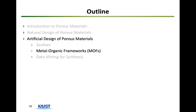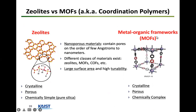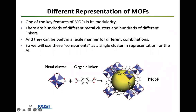We then moved on to MOFs, which are chemically more complicated but in some sense modular and have high tunability compared to zeolites. For MOFs we decided not to use the Gaussian representation for each atom — that would be too cumbersome. Instead, we exploited the modular nature of these materials: MOFs can be decomposed into metal clusters and organic linkers stitched together, so instead of representing all metal cluster atoms one by one, we lump them together and represent the metal cluster as type A and the linker as type B.